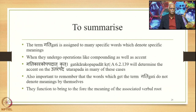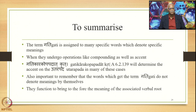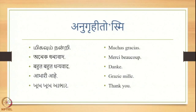To summarize: the term Gati is assigned to many specific words denoting specific meanings in the section from 1460 up to 1479. When these words undergo compounding — stated by Kugatip Pradayaha — and accent operations stated by, for example, Gati Karakopapadat Krita, i.e. 62139, the accent on the Uttarapada is determined. It is also important to remember that the words which get the term Gati do not denote meanings by themselves; they function to bring to the fore the meaning of the associated verbal root, and so they are also called Diyotaka. Thank you very much for your patience.